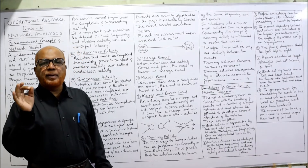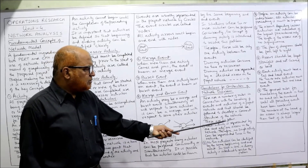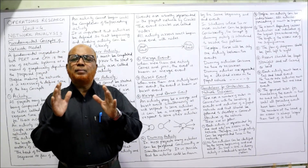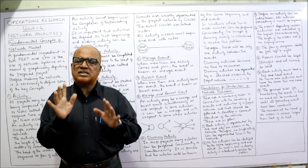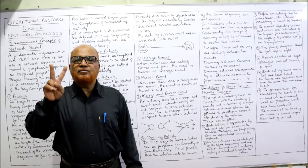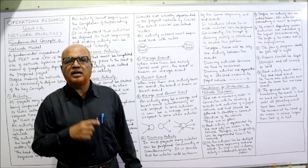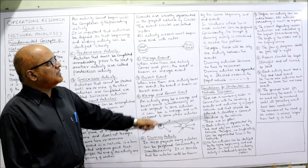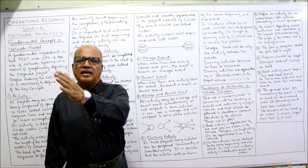Guidelines for construction of a network diagram: some rules must be followed while drawing a network diagram. First, each activity is represented by one and only one arrow in the network — no single activity can be represented twice; one activity, one arrow. Second, no two activities can be identified by the same beginning and ending event; if two concurrent activities exist, we must use the dummy activity concept.